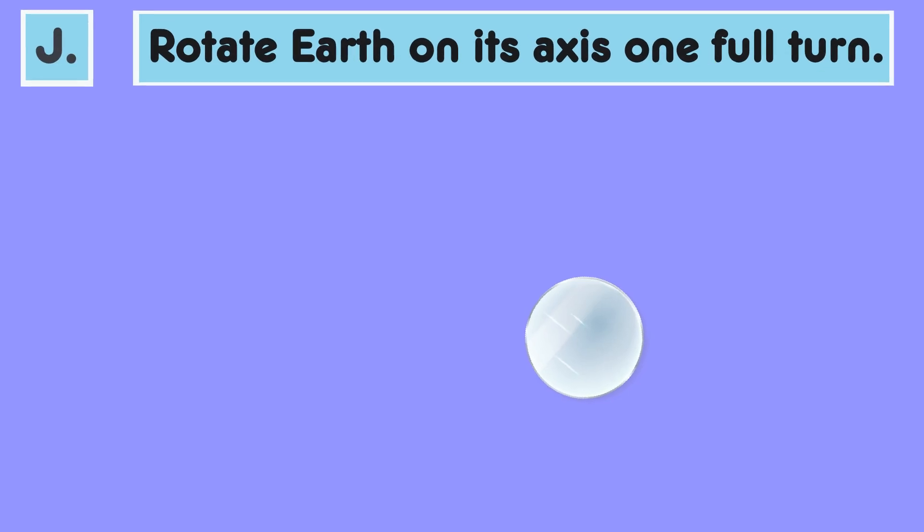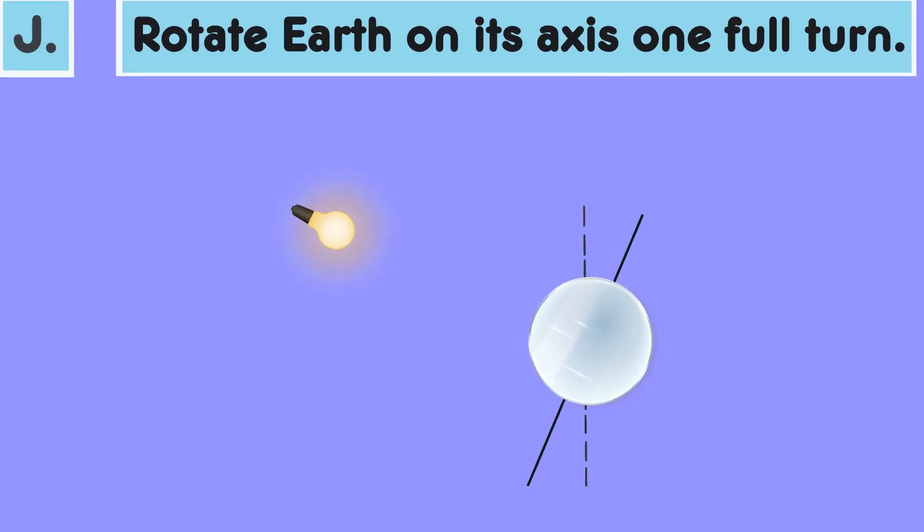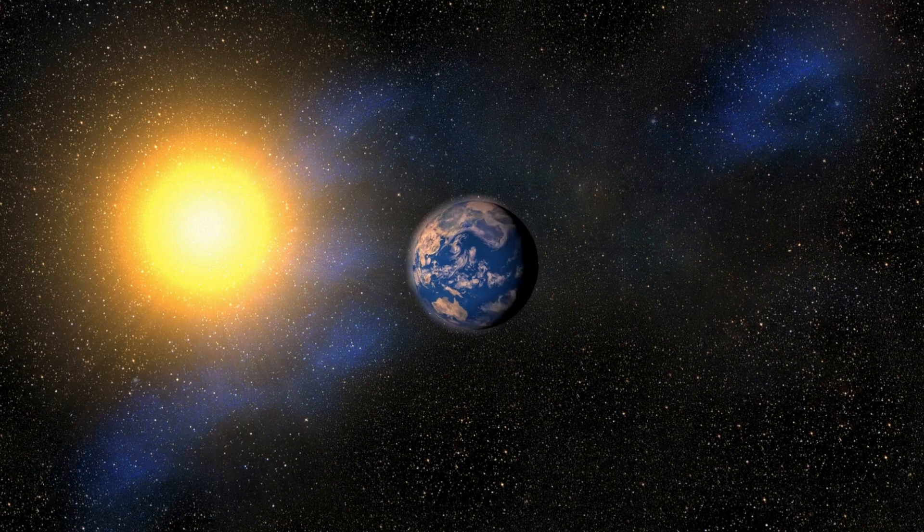Let's perform the demonstration now. Observe as I rotate our Earth model. Notice how the side facing the bulb, our stand-in for the Sun, is bathed in light, depicting daytime. Meanwhile, the side away from the bulb falls into shadow, representing nighttime. This continuous rotation brings about the regular alternation of day and night that we experience on Earth.